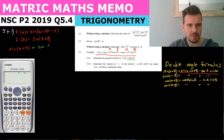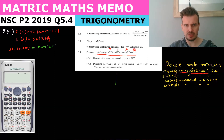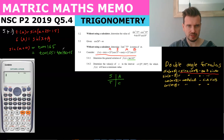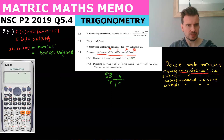Using the CAST diagram, tan(165) = tan(180 - 15). Since 180 - theta is in the second quadrant, the tan value is negative. So tan(165) = -tan(15).